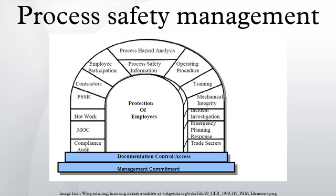Information pertaining to the hazards of the highly hazardous chemicals should consist of at least the following: toxicity information, permissible exposure limit, physical data, reactivity data, corrosivity data, thermal and chemical stability data, and the hazardous effects of inadvertent mixing of different materials that could foreseeably occur.